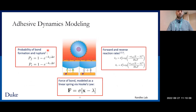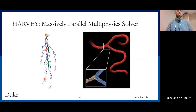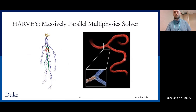At the submicron regime, we have the adhesive dynamics model. This is a fairly simple model — a stochastic scheme for modeling the rupturing and formation of adhesive bonds, which are treated as mechanical springs. We have kinetic rates modulated by an applied force for determining how likely a bond is to form or break during a given time step. All of these methods were developed and incorporated into Harvey, our lab's in-house massively parallel multiphysics solver, used for many applications including cardiovascular simulations and fluid-structure interactions with cells.